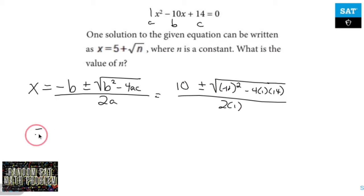So let's move that over here, do some simplifying. 10 plus or minus the square root of 100, because negative 10 squared is 100, minus 56, all over 2 times 1.